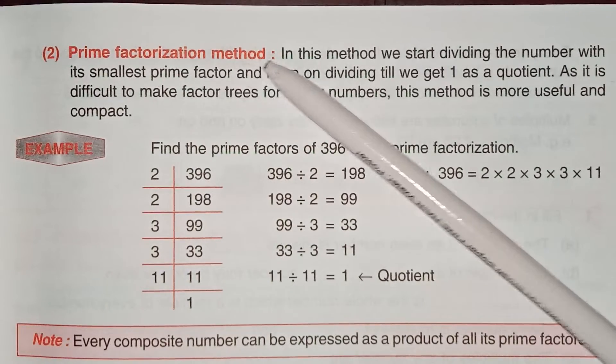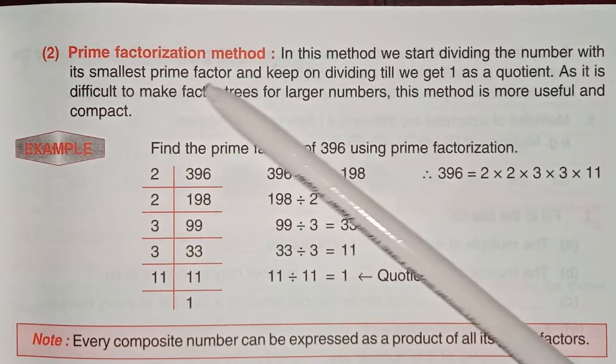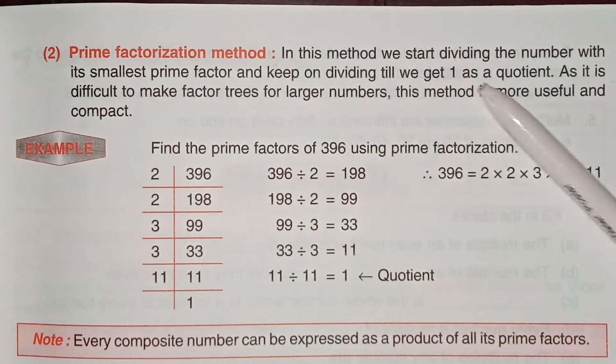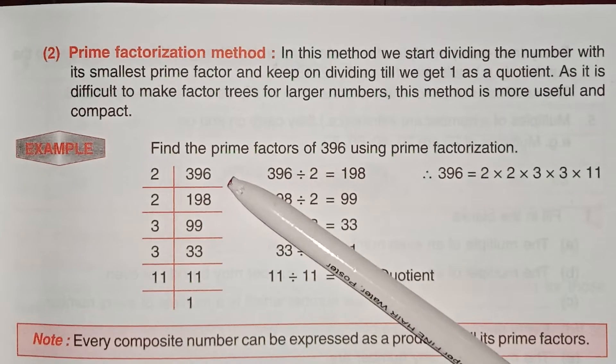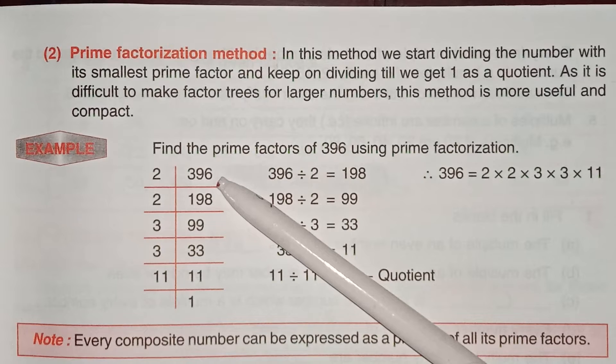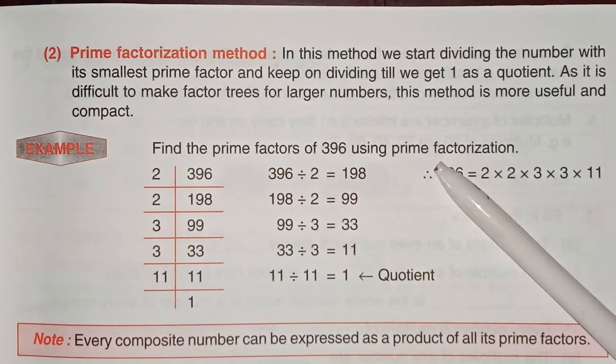Prime factorization method: In this method we start dividing the number with its smallest prime factor and keep on dividing till we get 1 as a quotient.